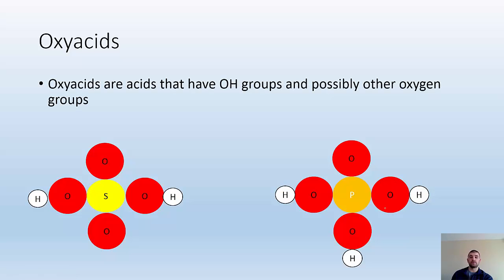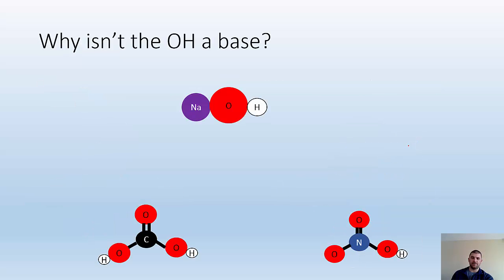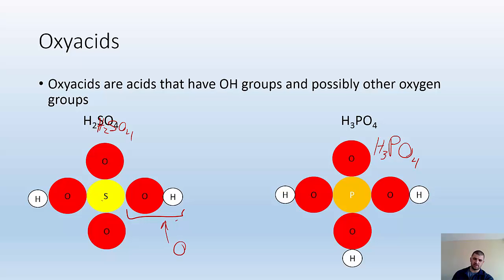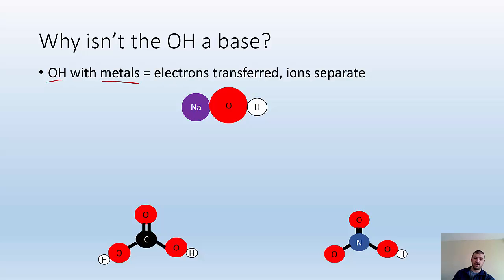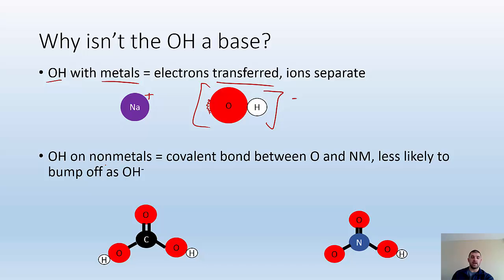Oxy acids are acids that have an OH group and possibly other oxygens, like H2SO4 and H3PO4. You might ask: if they have OH groups, isn't that what a base is? When we have an OH ion with metals, we get an ionic bond holding them together with electrons being transferred, so when you dissolve it those ions separate into OH minus and its cation. But when we have OH bonded onto non-metals, we've got a covalent bond between oxygen and the other atoms, which is harder to break apart. It's less likely to bump off as an entire OH group — it's more likely you're just going to break the O-H bond instead of the O-carbon bond.